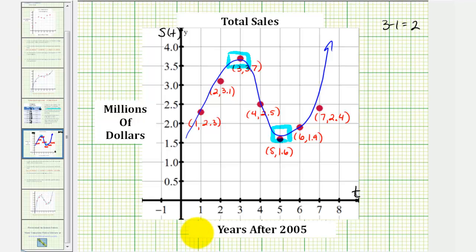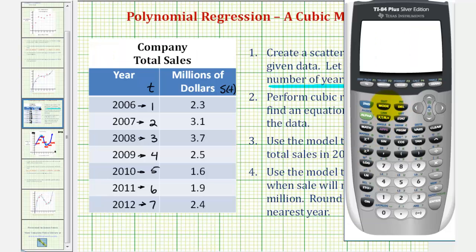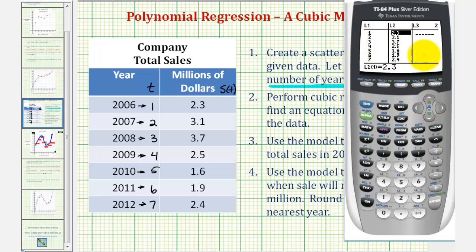Now let's go to our graphing calculator and enter the data. So we'll press stat, enter, clear out any old data, by going to the top of the column, press clear, enter. So we'll go up to L1, press clear, enter. Now we'll enter the new data. Again, L1 will be T, so we'll have one through seven here.